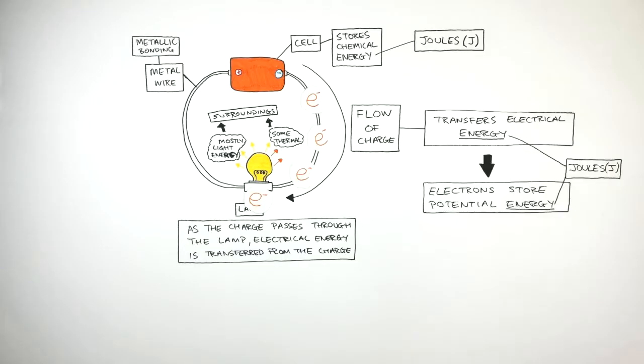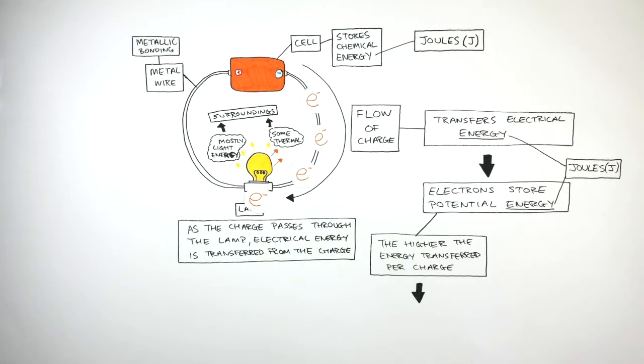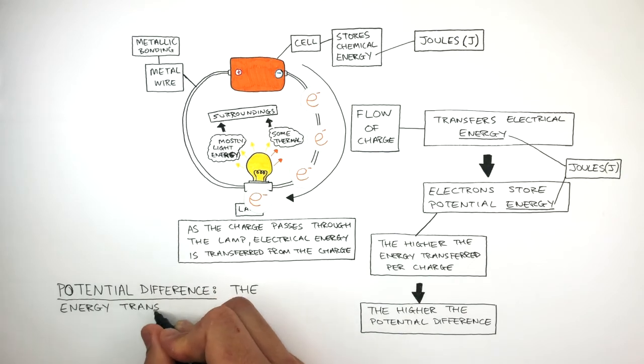The potential difference is the electrical energy which each coulomb of charge stores. So the higher the energy transferred per charge, the higher the potential difference. The definition of potential difference is the energy transferred per charge.